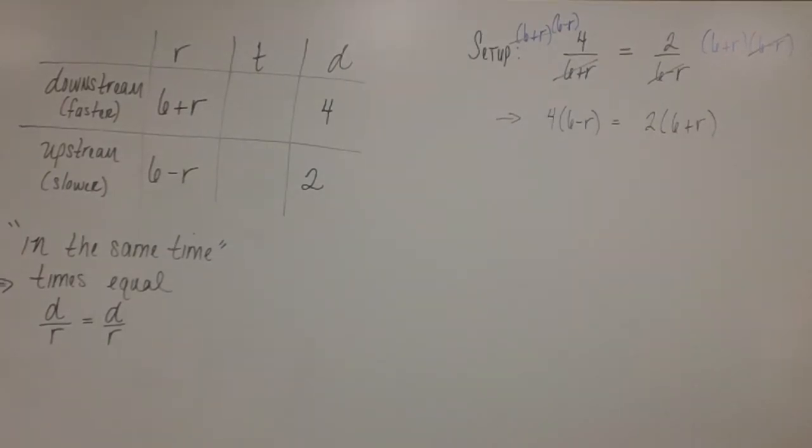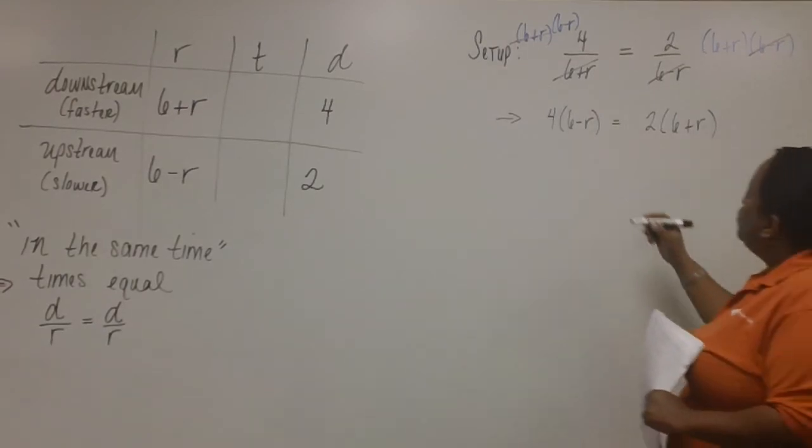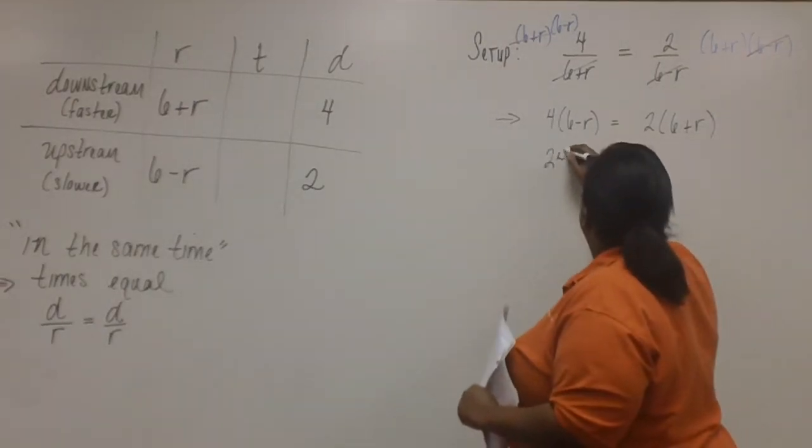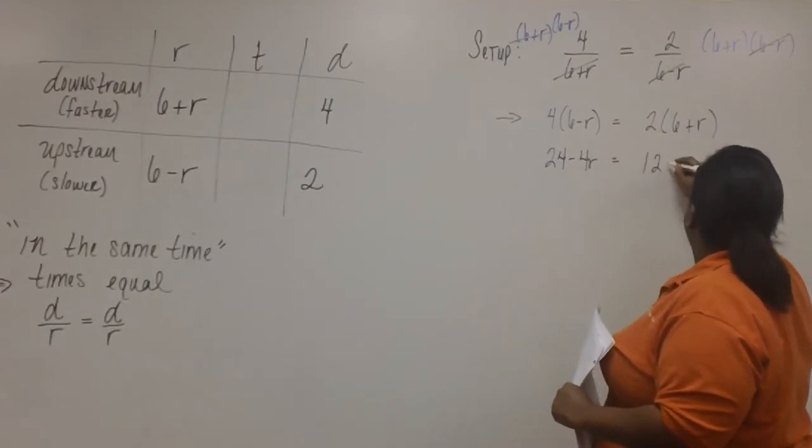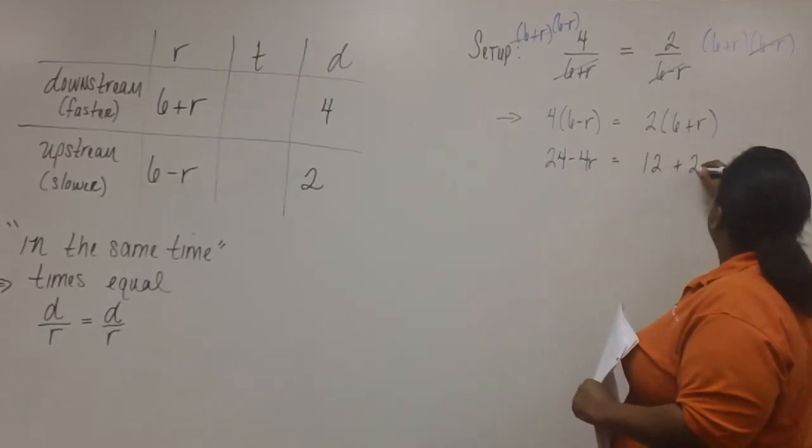Now, we need to distribute. After distributing, we get twenty-four minus four R equal to twelve plus two R.